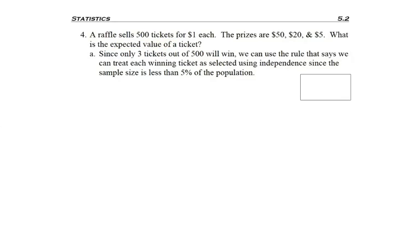Now when it comes to the probability, we're going to need to use this rule that tells us that since we're only having three tickets win out of 500, that's less than 5% of the total tickets. So we get to treat it for independence and we'll use that when it comes to probability.